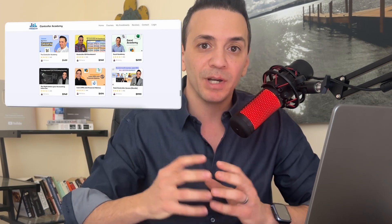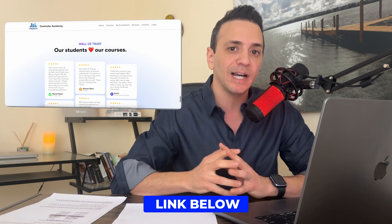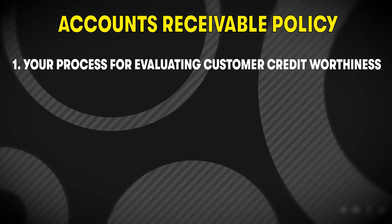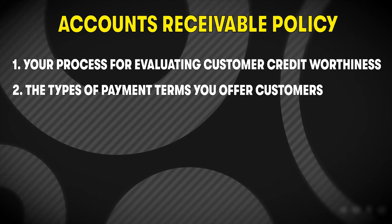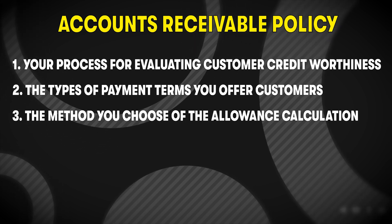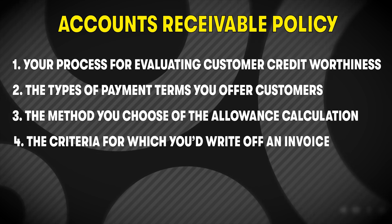The entire process for accounts receivable and the allowance is covered in detail in my Controller Academy online course — link in the description. As for choosing a calculation method, what's important is selecting one that makes sense for your business and your knowledge of your customers. Document your approach in an accounts receivable policy of two to three pages covering: your process for evaluating customer creditworthiness, the payment terms you offer, the method chosen for the allowance calculation, and the criteria for writing off an invoice.